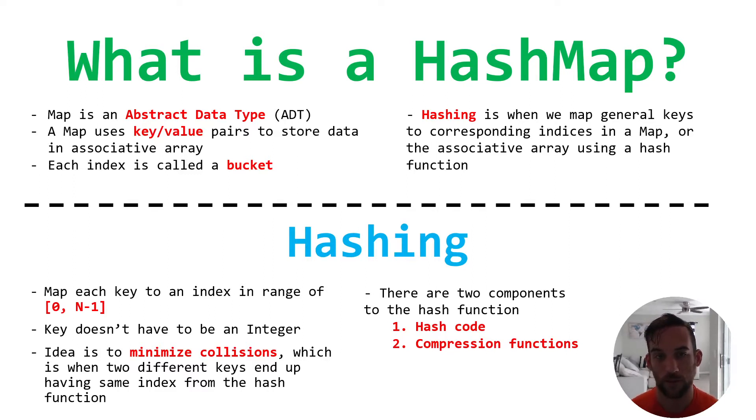One other important thing when talking about HashMaps is collisions. So we want to minimize collisions. So what is a collision?